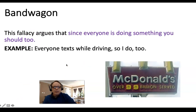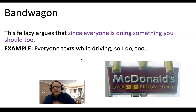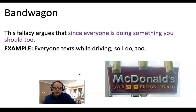Bandwagon is basically an appeal that says everyone's doing it, so you should do it too. For example: 'Everyone texts while driving, so I do too' — which disregards the fact that it might be dangerous. Just because everyone does something doesn't mean it's a good idea. McDonald's advertising does this: 'Over 99 billion served' is sort of a bandwagon thing suggesting you should be eating there too because everybody does. These fallacies will be on one of our quizzes, so you can go back and take notes. Being able to recognize fallacies helps you evaluate what you're reading and improve your own argumentation when writing.